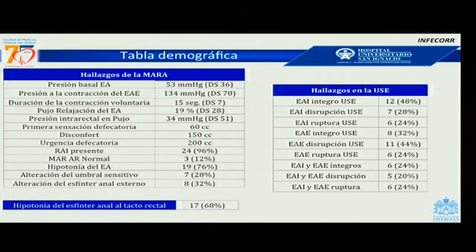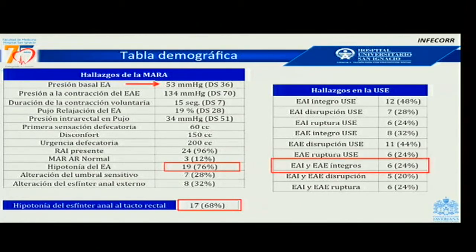En los hallazgos de la manometría anorectal, el promedio de la presión anorectal fue de 53 mmHg. El 76% de los pacientes tenían hipotonía por manometría anorectal, y por tacto rectal el 68% presentó hipotonía. En los hallazgos de ultrasonografía, solo el 24% de los pacientes tenían integridad de ambos esfínteres, lo que significa que el 76% tenía alteración estructural del esfínter anal. La alteración estructural se definió como ruptura o disrupción del esfínter anal interno, del esfínter anal externo, o de ambos esfínteres. Se realizó análisis por subgrupos en cuanto a la estructuralidad.